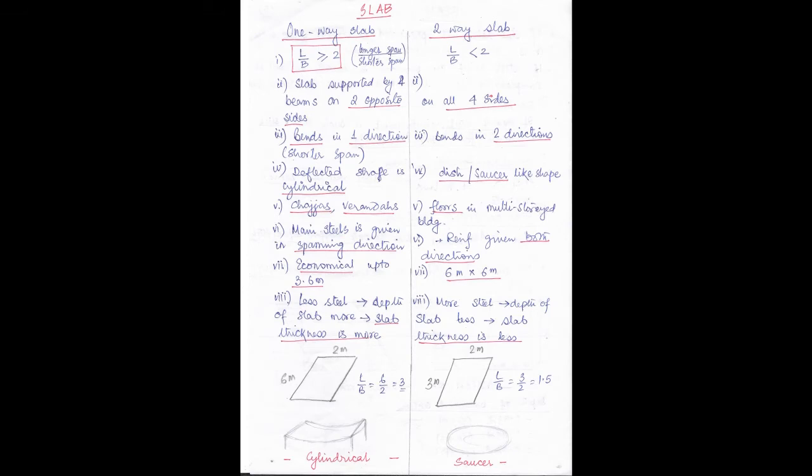Good morning friends. Today I will discuss about the slab and the difference between one-way slab and two-way slab. Many questions can come from this topic. A one-way slab is where L by B is greater than or equal to 2 — that is, the ratio of the longer span to the shorter span is more than or equal to 2. A two-way slab is where the L by B ratio is less than 2.